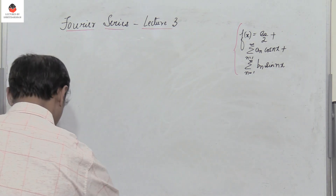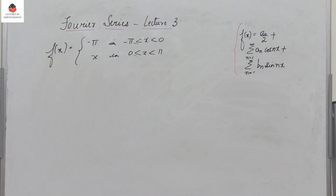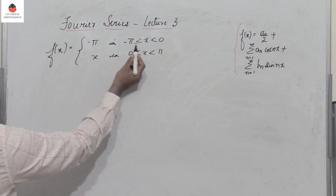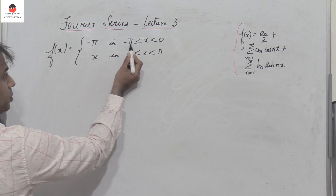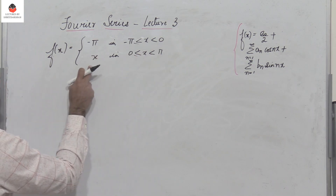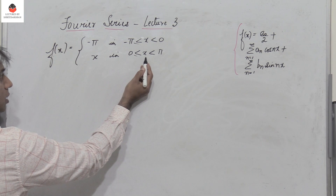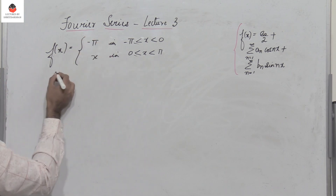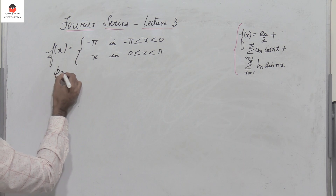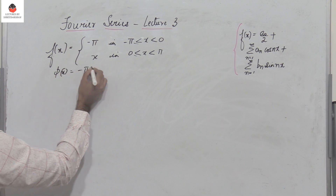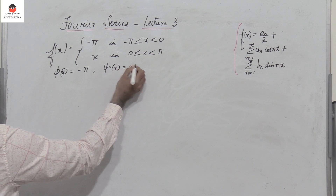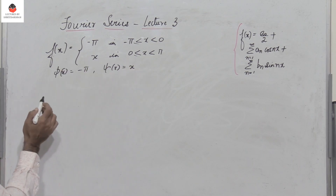Let's take an example. Consider the given function f(x) which equals minus pi when x is between minus pi and zero, and equals x when x varies between zero and pi. Let φ(x) equal minus pi and ξ(x) equal x.